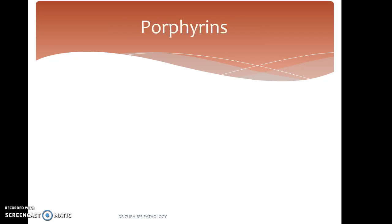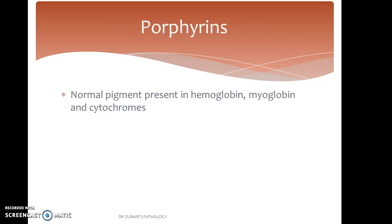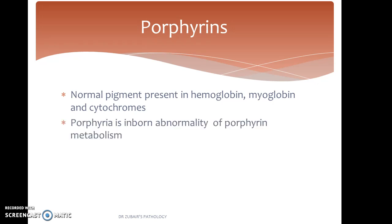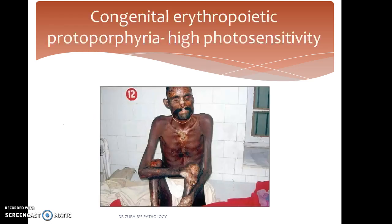What are porphyrias? Porphyrins are normal pigments present in hemoglobin, myoglobin, and cytochromes. Porphyria is an inborn abnormality of porphyrin metabolism. It is of two major types: erythropoietic and hepatic. Here, a patient with congenital erythropoietic protoporphyria is suffering from high photosensitivity in sun-exposed areas.